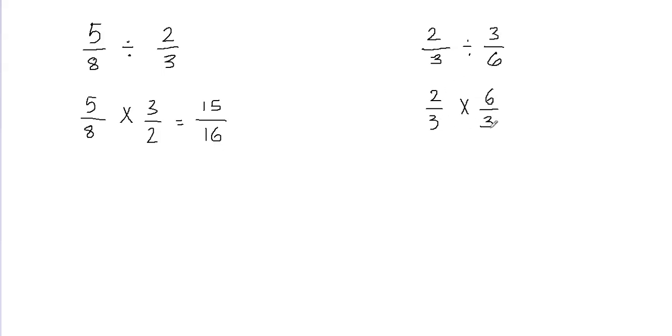The second step is to multiply both fractions. So now we're going to multiply 2 and 6. 2 times 6 is 12, and then 3 times 3 is 9. We're done with the second step. We multiplied the fractions.